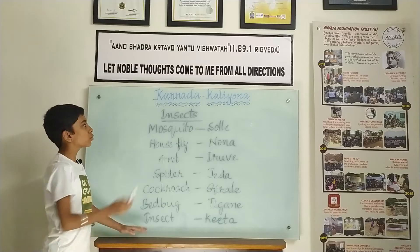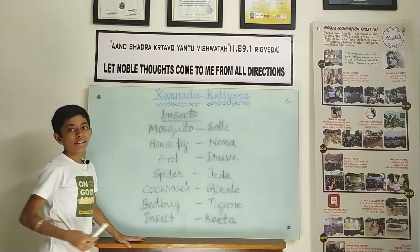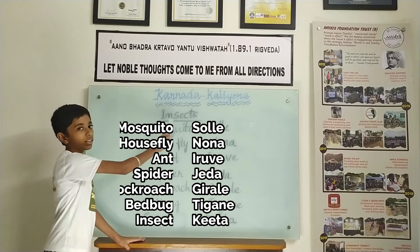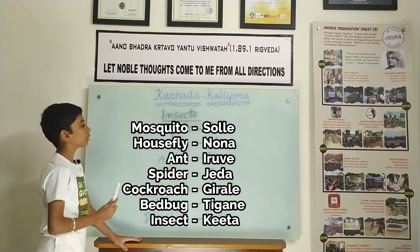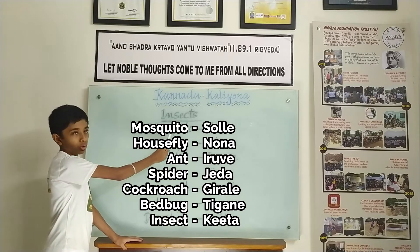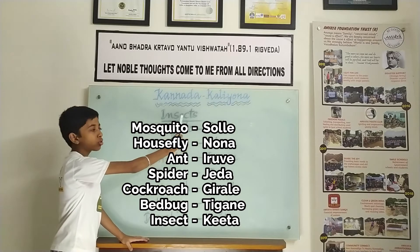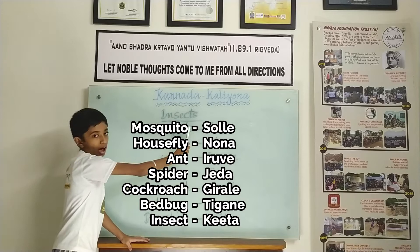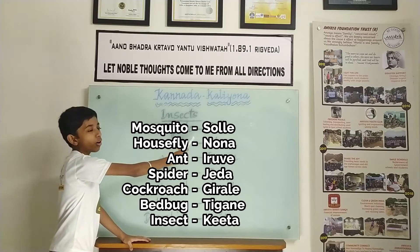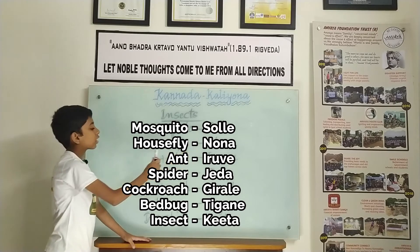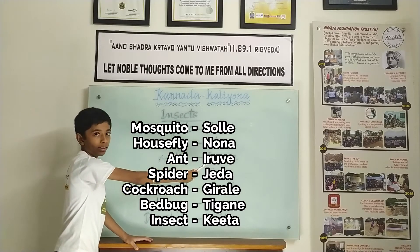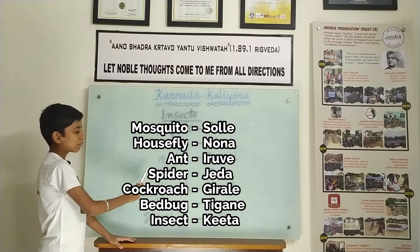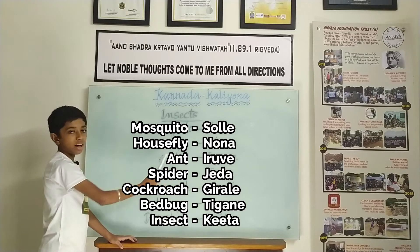Namaskar friends, welcome to Kannada Kalyana Bandware Foundation. Today we are going to learn insects. Mosquito: solleh. Housefly: nona. Ant: iruve. Spider: jada.